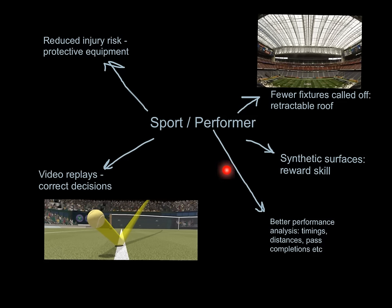There are also other kinds of technology such as timings, distances, pro zone stats, and pass completion rates. We can do great performance analysis so the athlete can analyse their performance at a high level and see where they're going right and where they're going wrong. So there are a lot of advantages of different types of technology for the sport and the performer.